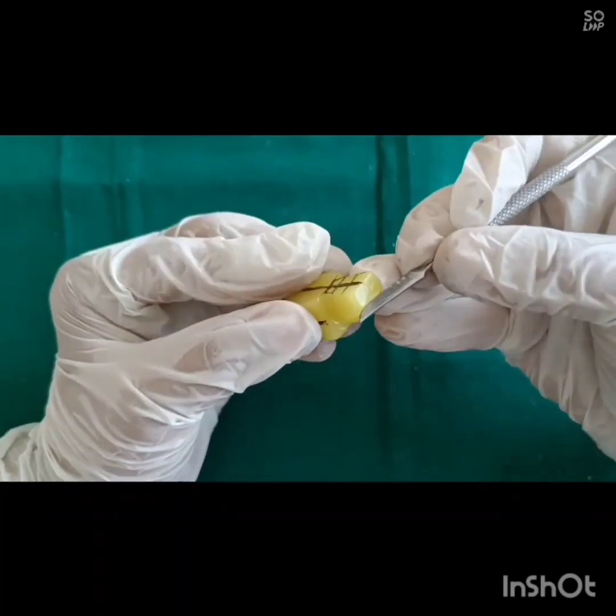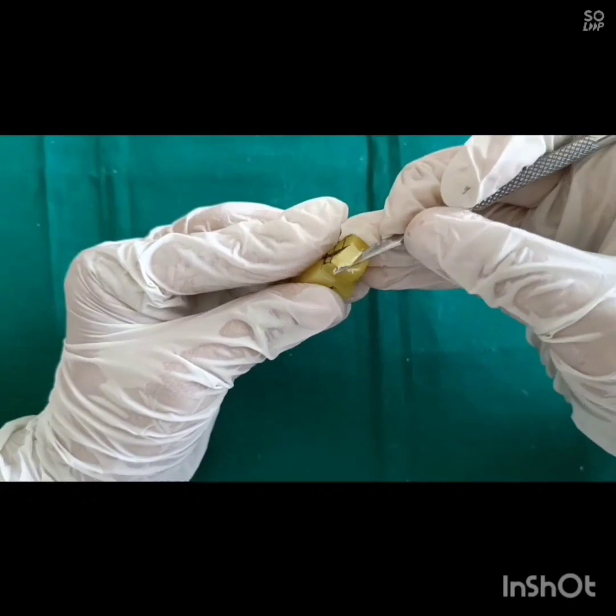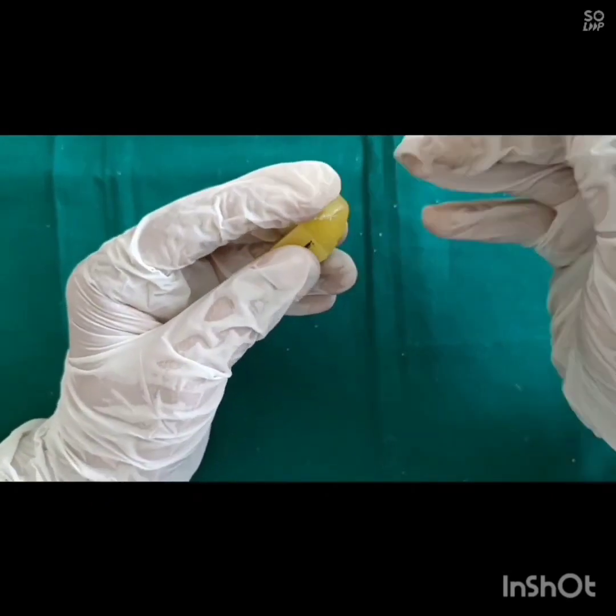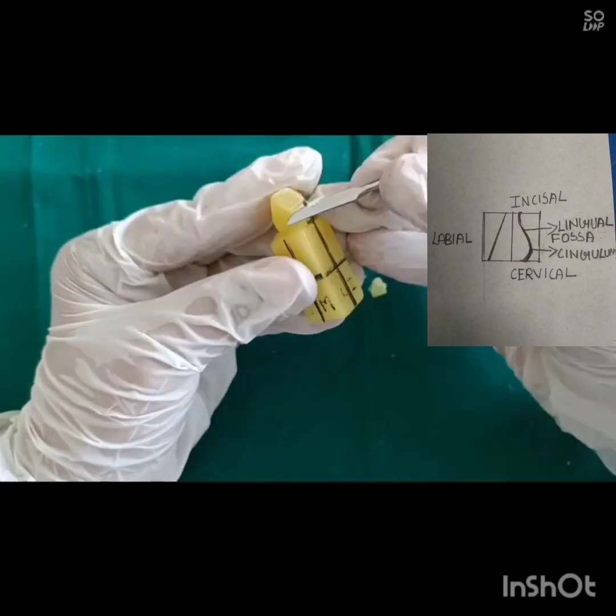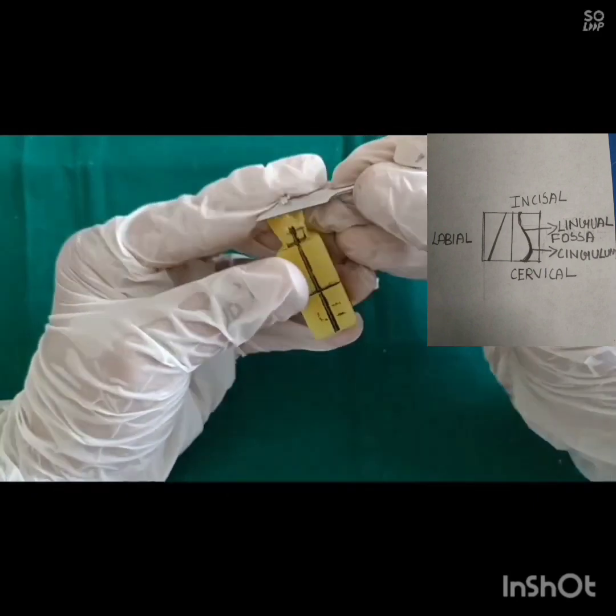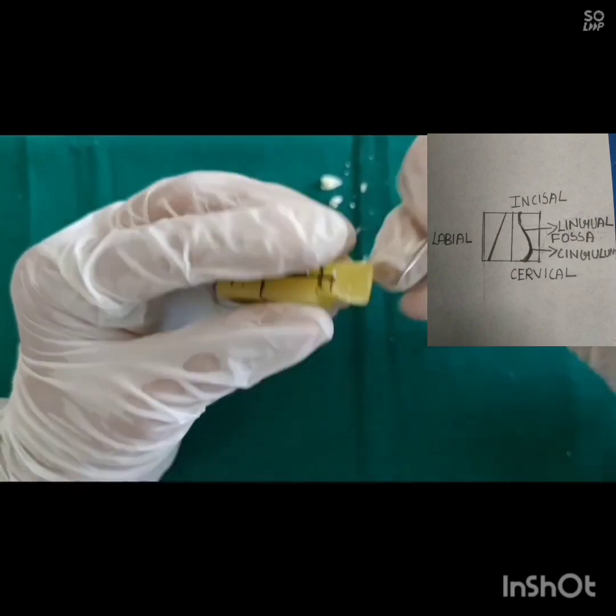Start removing the wax from lingual side and keep the cervical third area as it is. On lingual surface, marginal ridges are not prominent and cingulum is also not well developed. So there is like concavity known as lingual fossa.